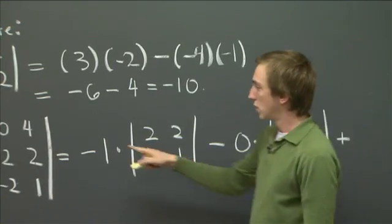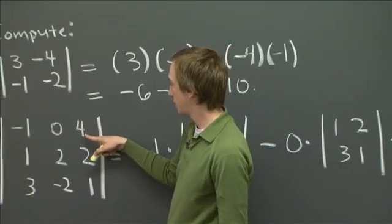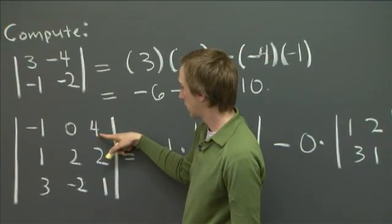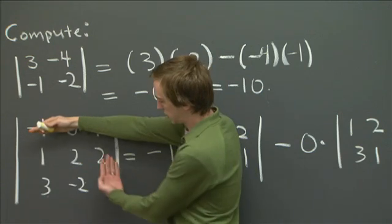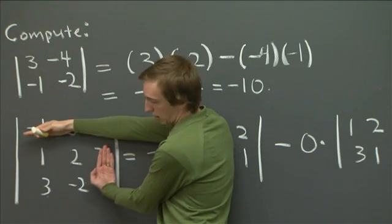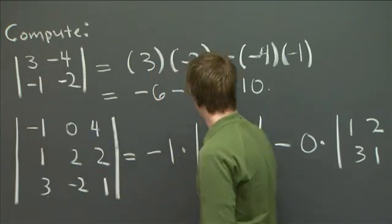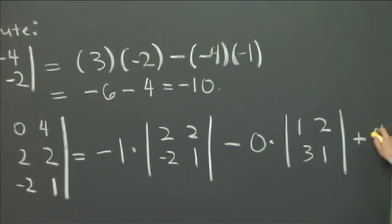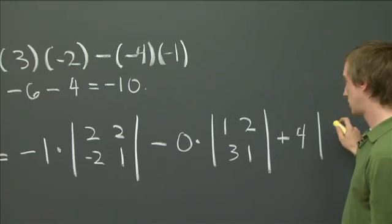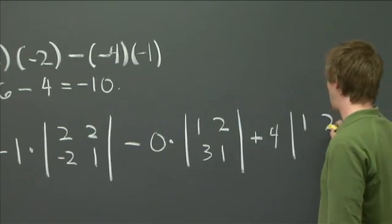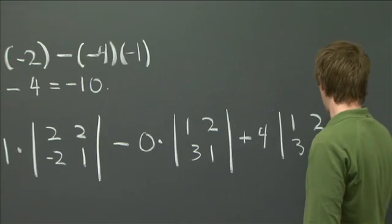Now finally, we have to walk over here. And we have to take 4 times the minor, which we get by covering up the row and column containing 4. 1, 2, 3, minus 2.